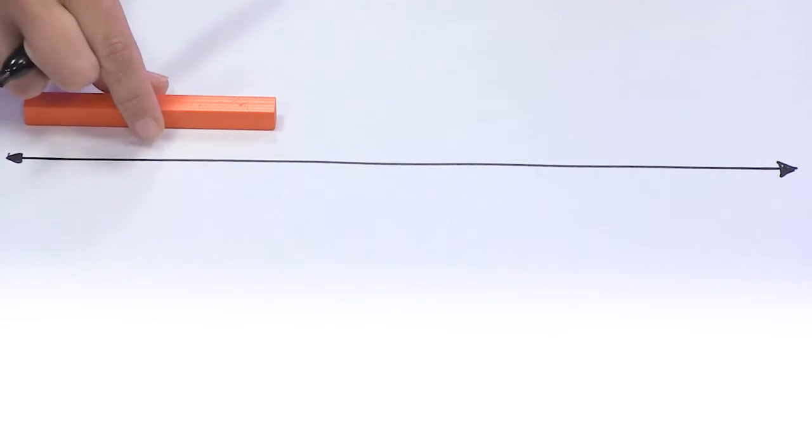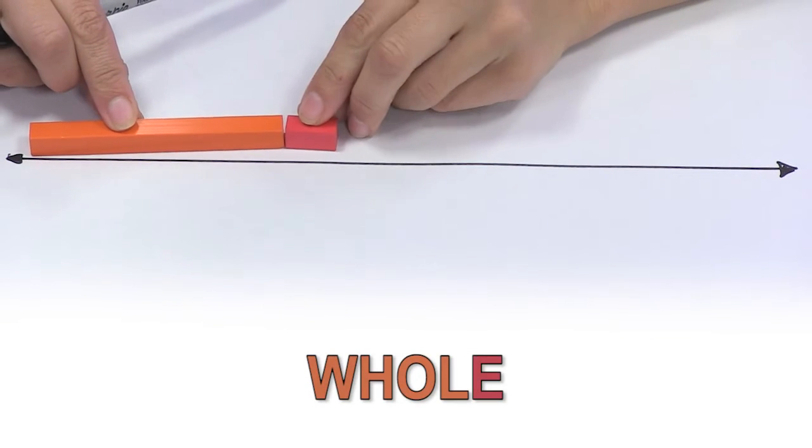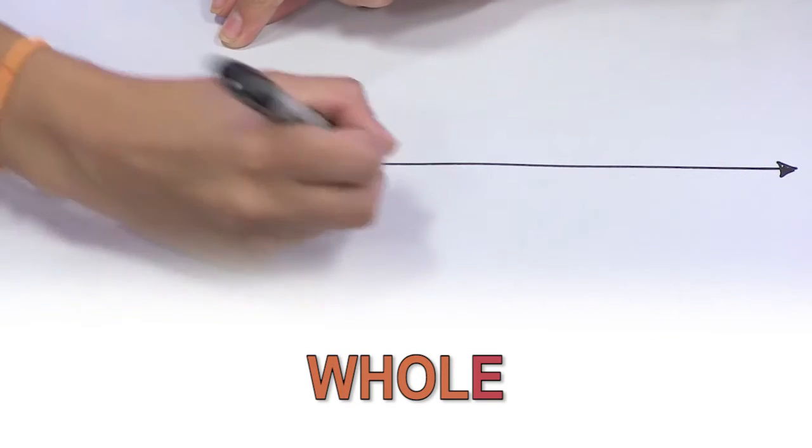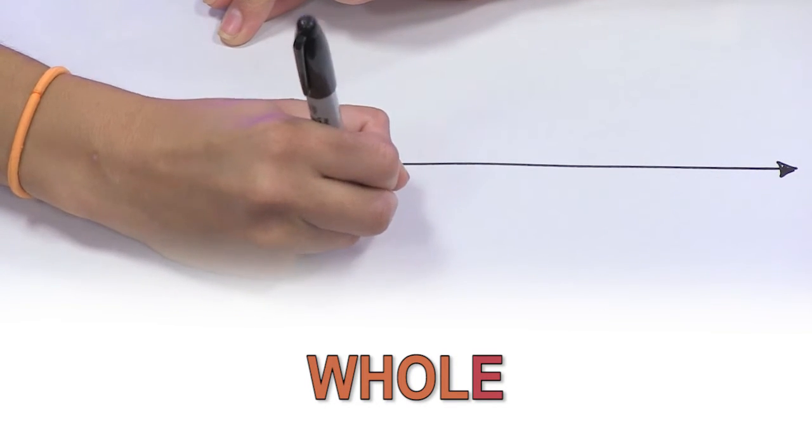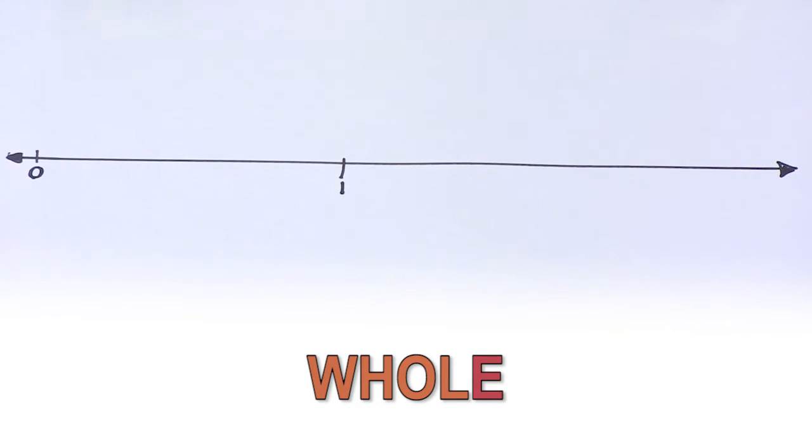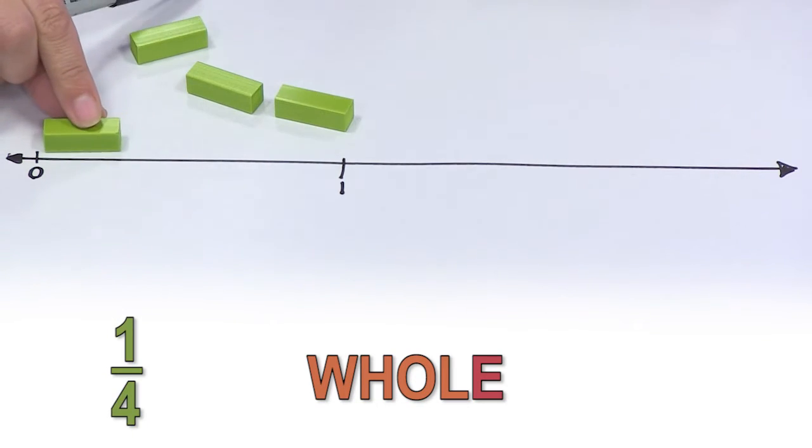For our next number line, I want to use the same orange rod, combining it with a red rod, to make my whole. I now will look through my rods to find what represents one-fourth of my whole. The green rod shows one-fourth of the whole.